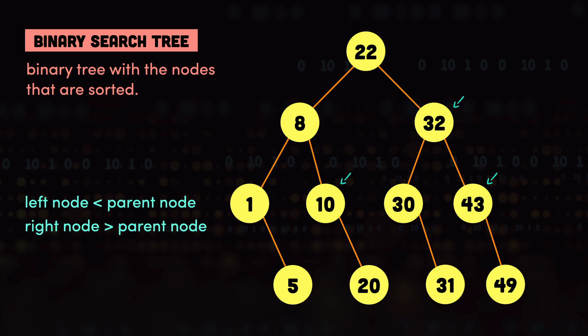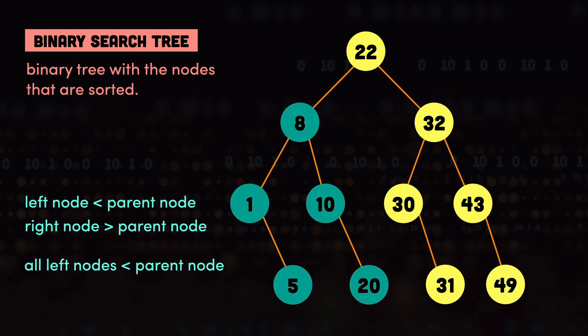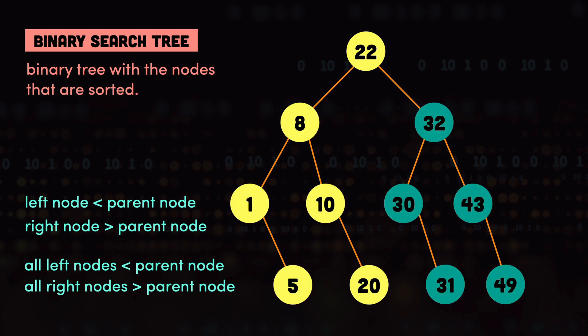The next property is that all values on the left side of the root are smaller than the root node. Looking at this tree, the values 1, 5, 8, 10, and 20 are all smaller than the root node 22. And all values on the right side of the root are greater than the root node — so 30, 31, 32, 43, and 49 are all greater than 22.